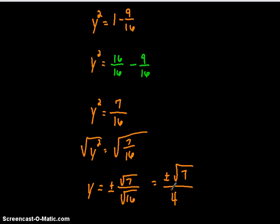So y could be either two numbers, positive or negative square root of 7 over 4. But if you go back and look at the directions, it says the y had to be negative. So the only one that we want is the negative one, so it's going to be negative square root of 7 divided by 4.